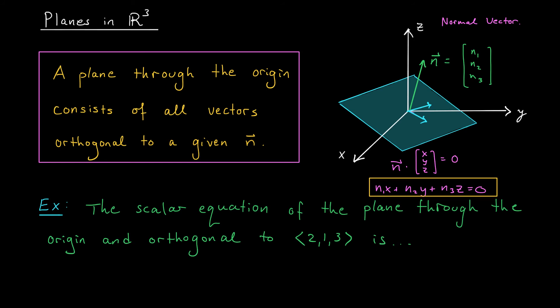So, for example, what's the scalar equation of the plane through the origin that's orthogonal to this vector here, 2, 1, 3? Well, 2, 1, 3 is playing the role of N. It's the normal vector for the plane. According to our equation, our plane is 2X plus 1Y plus 3Z is equal to 0.